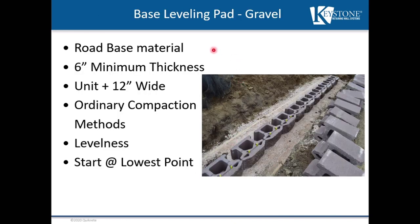The leveling pad generally consists of a road-base type material that can be compacted through ordinary means such as a vibratory plate compactor. We're checking to make sure that the leveling pad is as level as possible front to back and side to side. The more work we put into doing this leveling pad correctly, the less work we have to do when setting our base course for the retaining wall construction. The base course is the most important component of retaining wall construction as it sets the tone for the remainder of the wall construction courses.